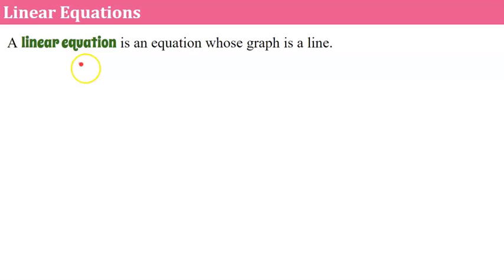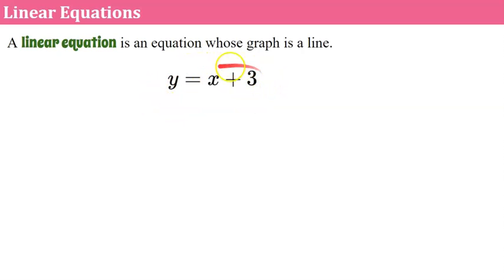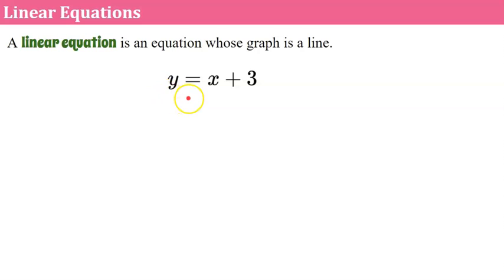So first, let's talk about what a linear equation is. A linear equation is an equation whose graph is a line. We have this linear equation right here: y equals x plus 3. The first mistake students often make is they look at this and think they need to solve. You cannot solve a linear equation written in two variables. When we have two unknowns, there is no way to solve for one of them unless you had two equations — we'll talk about that in a future unit. So the only thing you can do is graph this or identify solutions of the equation.